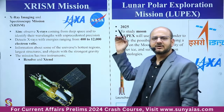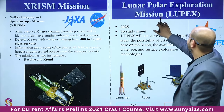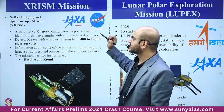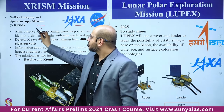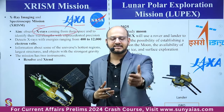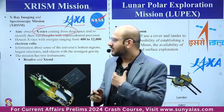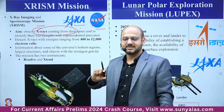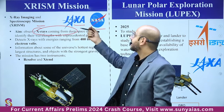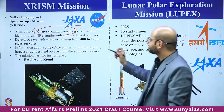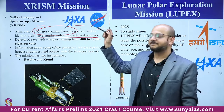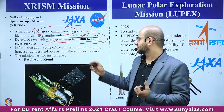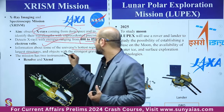XRISM mission — X-ray Imaging and Spectroscopy Mission — is a collaboration between JAXA (Japan) and NASA to observe X-rays from deep space, helping understand galaxy evolution and the cosmos. It detects X-rays with energies ranging from 400 to 12,000 electron volts, identifying wavelengths with unprecedented precision to reveal information about the universe's hottest regions, largest structures, and objects with the strongest gravity.